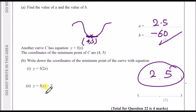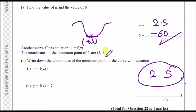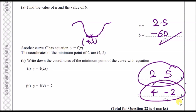For y = f(x) − 7: the minus 7 is outside the function, meaning it is a shift in the y-axis. Because it's minus 7, we subtract 7 from the y-coordinate: 5 minus 7 equals minus 2. The x-coordinate stays the same at 4. So the minimum point becomes (4, −2).